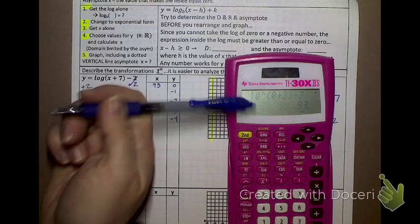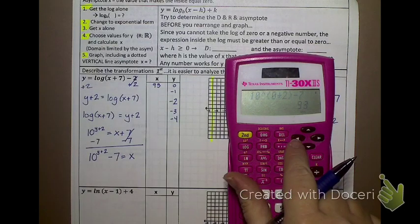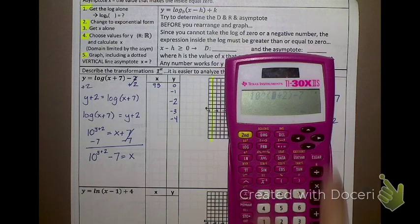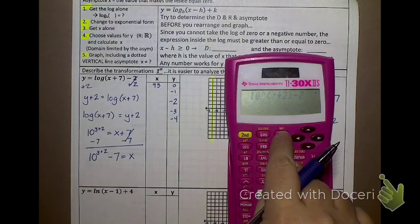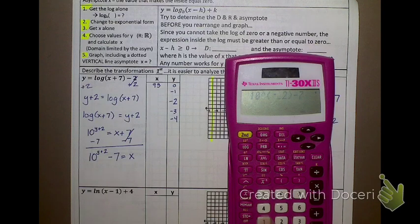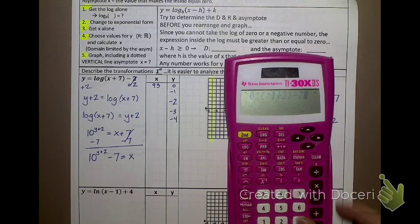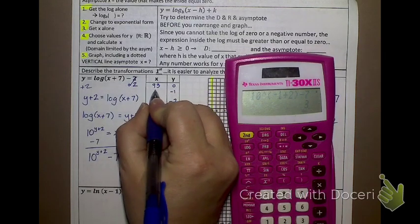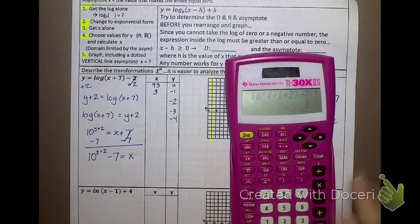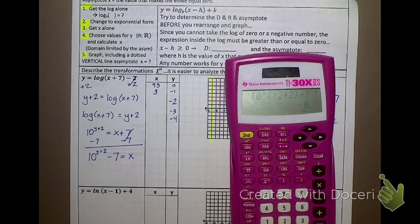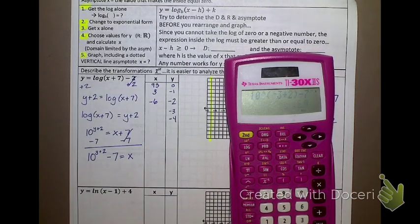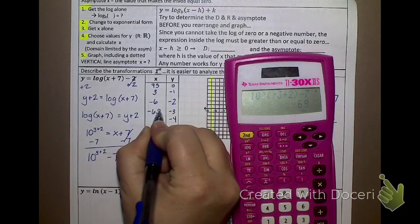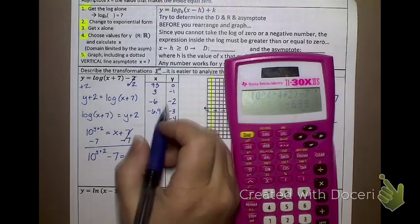I'm going to plug things in the exact same way. So, let's see. 10 to the, now there's more than one thing going on in that exponent, so I've got to put parentheses there. Parentheses. I'm going to start with 0 plus 2. Close my parentheses so that my calculator knows that the minus 7 is not a part of the exponent. And I hit equals and I get 93. That's a large number, isn't it? Yes. I may get large numbers. That's okay. Now, do I need to retype the whole thing in to plug in negative 1?